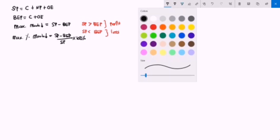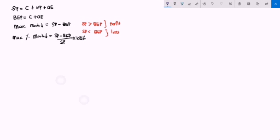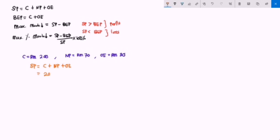Let's see an example. Say we have a cost of RM 200, a net profit of RM 70, and operating expenses of RM 30. Using the selling price formula, SP equals cost plus net profit plus operating expenses: 200 plus 70 plus 30, giving us RM 300.